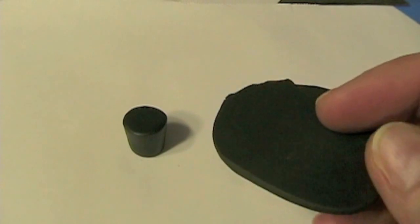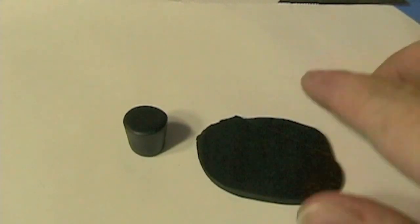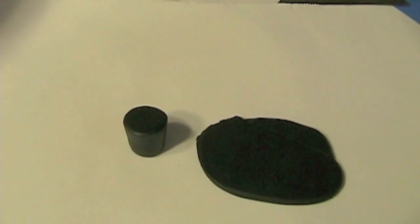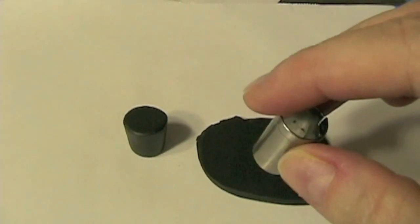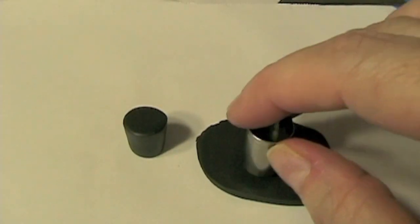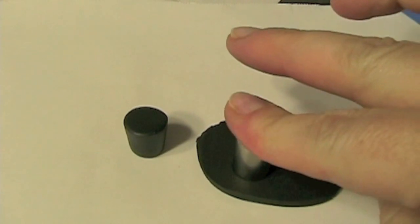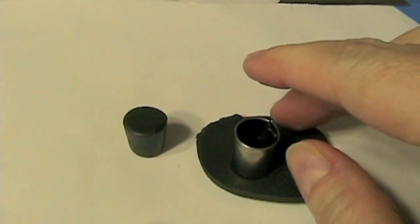I'm going to start with the black. Take some of your black clay and run it through your pasta roller on setting 9, and then take a small circular cookie cutter and cut out the hole.